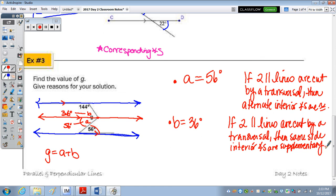And then last, we need to state the value of G, which is 92. And that's because the whole angle is equal to the sum of its parts.